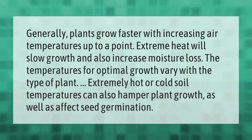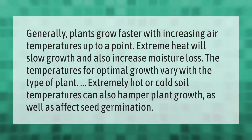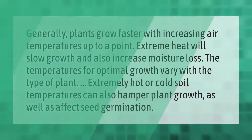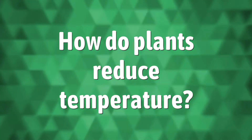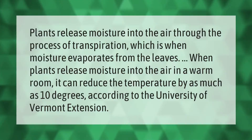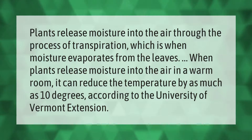soil temperatures can also hamper plant growth as well as affect seed germination. Plants release moisture into the air through the process of transpiration, which is when moisture evaporates from the leaves. When plants release moisture into the air in a warm room, it can reduce the temperature by as much as 10 degrees